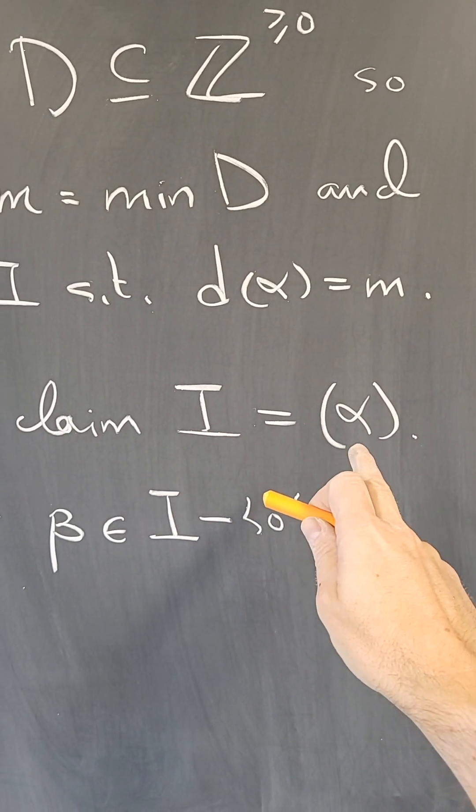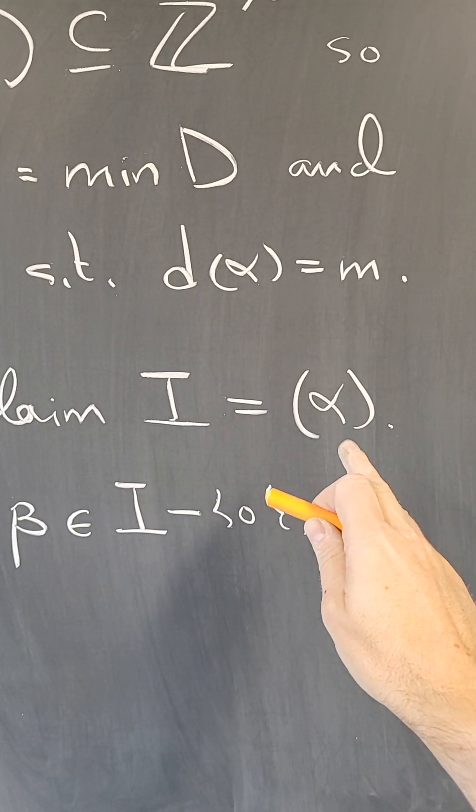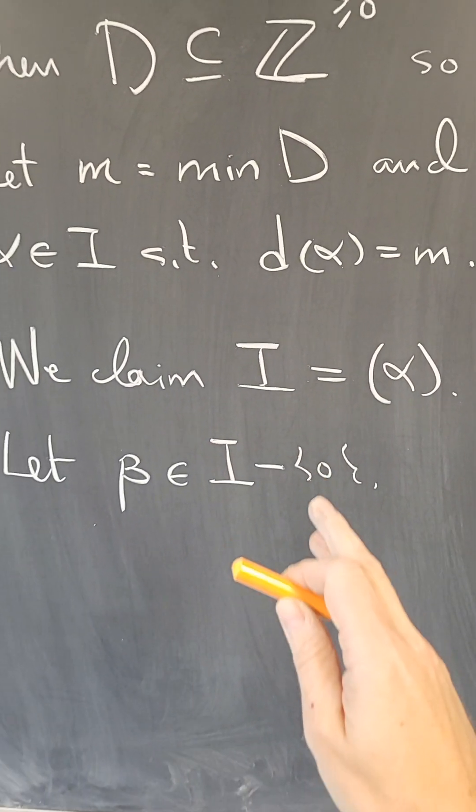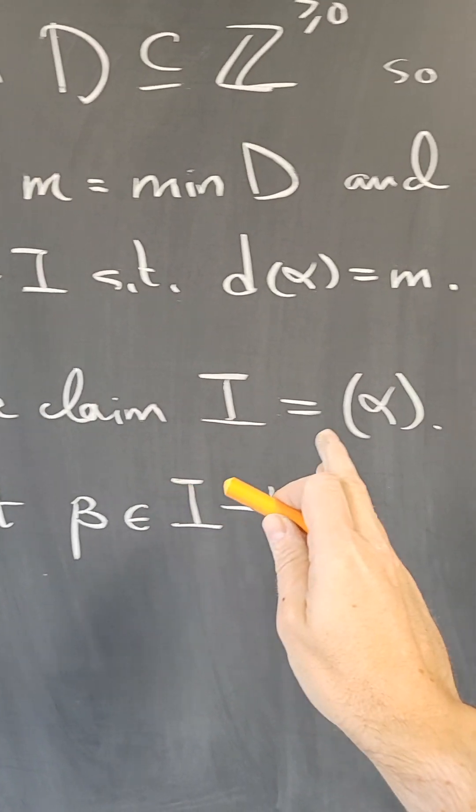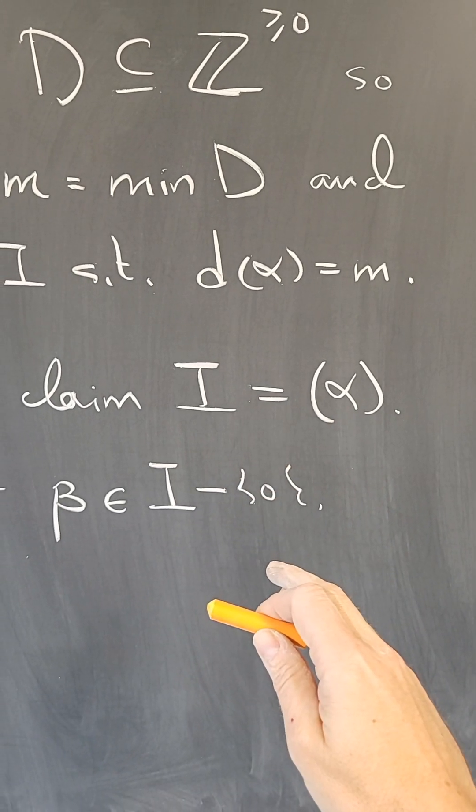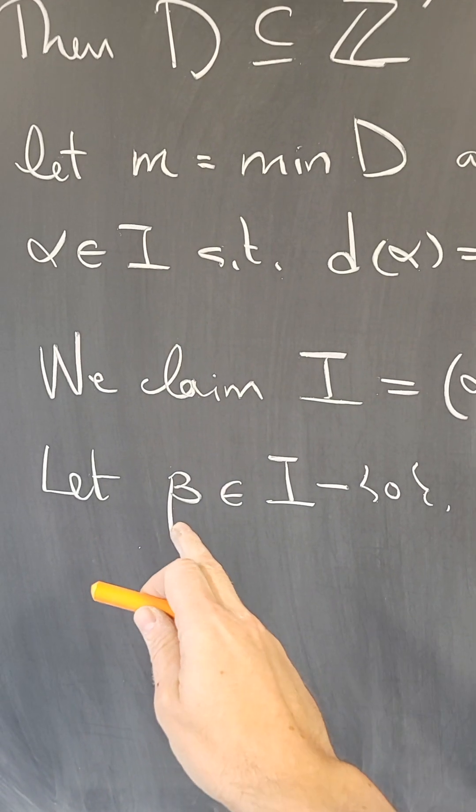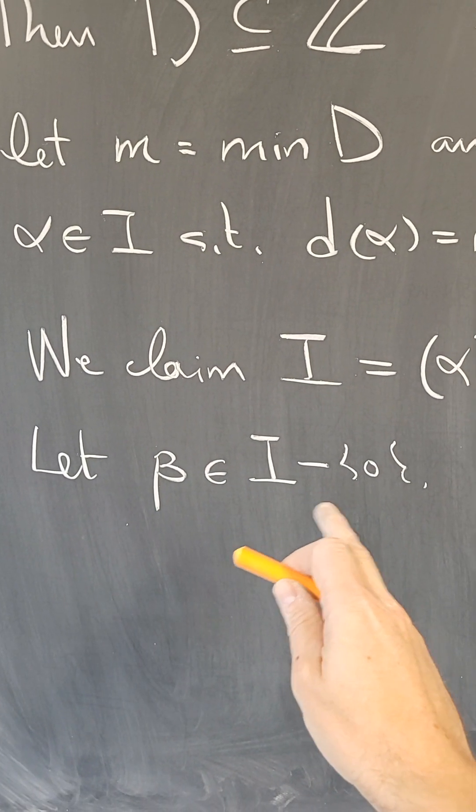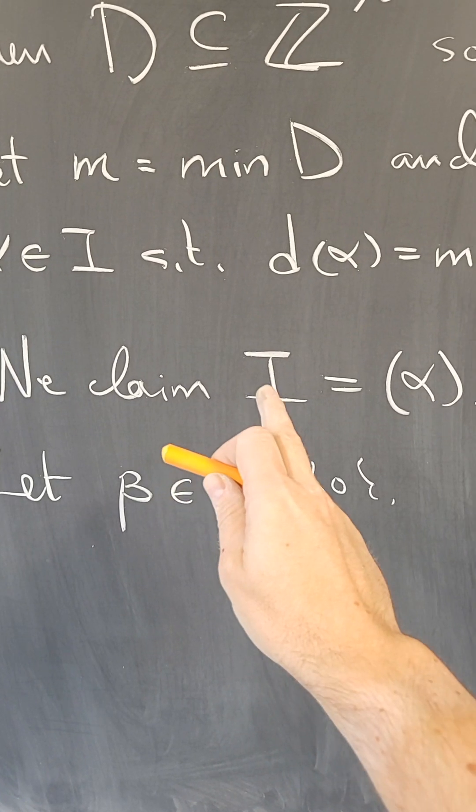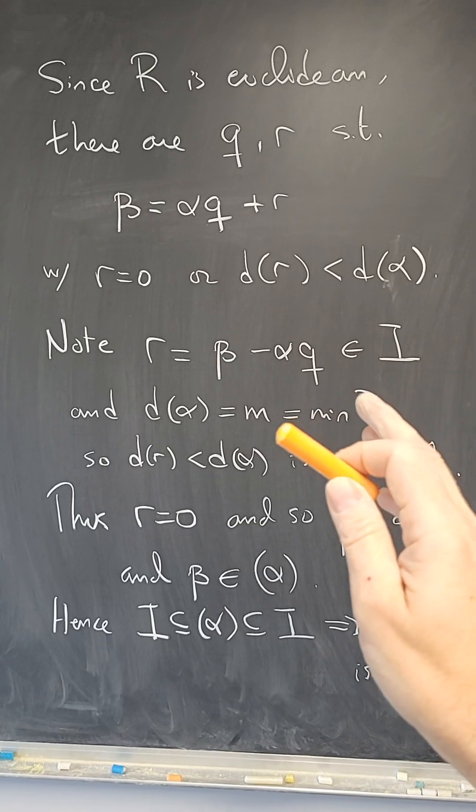Alpha is in I, so there is an inclusion already that this principal ideal is contained in I, but we want to show that actually I is contained in this principal ideal. So let beta be just any non-zero element of I, and I want to show that beta is in here.